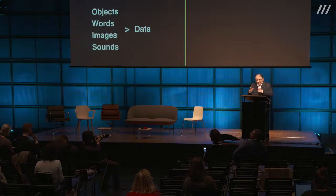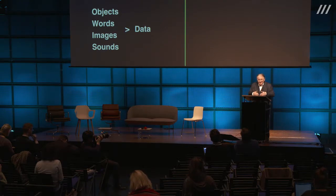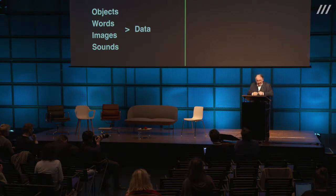But today, the new space of energy, information, flow of data, means that each object, word, image, and sound can turn into data. When you use a phone, images and spoken words become data, are telematically distributed, and can turn back again. This is a new idea. In the old world, words could not become objects, images could not become objects — hence Magritte's famous painting: you see a pipe, but 'this is not a pipe' because it is just a picture of a pipe, a representation. You could not turn the picture of a pipe into a pipe.